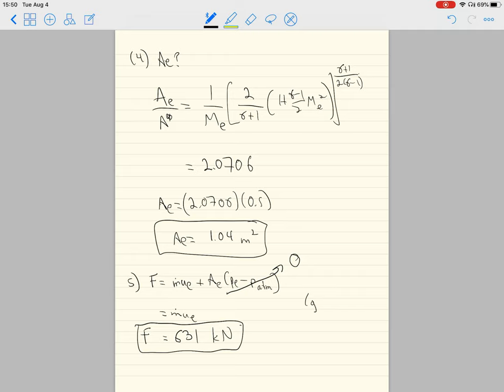Taking g is 9.81 meters per second squared as given, then we find the specific impulse, which is F over m_dot*g, which in our case is just UE/g. So this is just 1890 divided by 9.81, which is 193 seconds. And that's all there is to it.